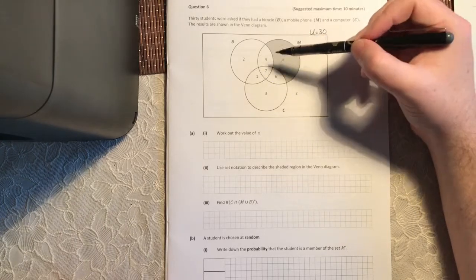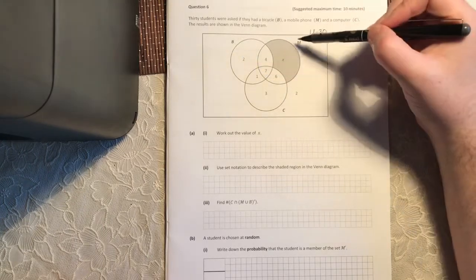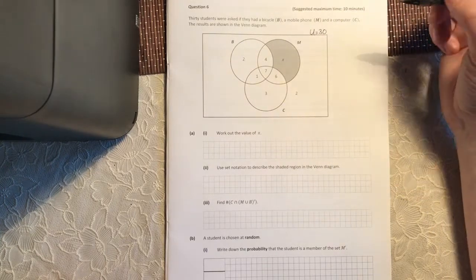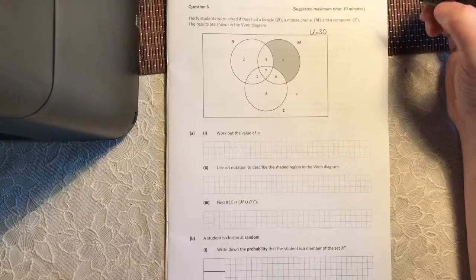These six students have a mobile phone and a computer, but they do not have a bike. This one person here is the only one who has a bike and a computer but no mobile phone. And seven students altogether have all three: a bike, a mobile phone, and a computer. And these two don't have any of those three things.